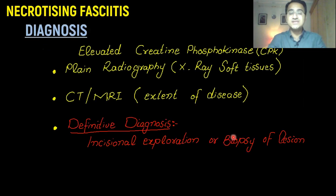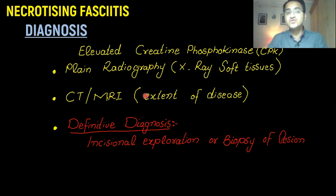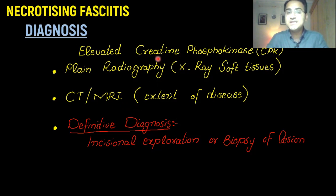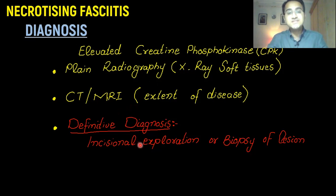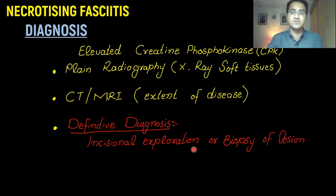Diagnosis of necrotizing fasciitis is usually made by plain radiography. You take X-rays of the soft tissues, and you do CT and MRI to see the extent of disease. Since there is destruction of the tissue and muscles, you will find CPK — creatinine phosphokinase — to be elevated. For definitive diagnosis, you must remember that in the exam, if they ask you about the definitive diagnosis, incisional exploration is the best initial step and the best way to make the diagnosis.